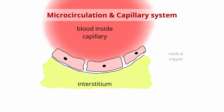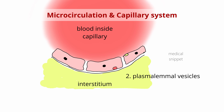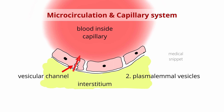The second pathway is the plasmolemal vesicles. They can imbibe small amounts of plasma or extracellular fluid and transport it across the endothelium, as shown. These vesicles can sometimes combine to form a vesicular channel for the transport of nutrients from plasma to tissues, or waste products from tissues into the plasma.